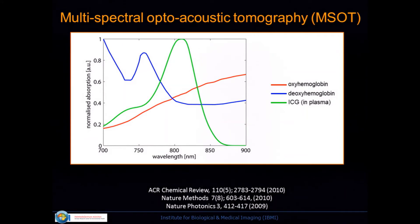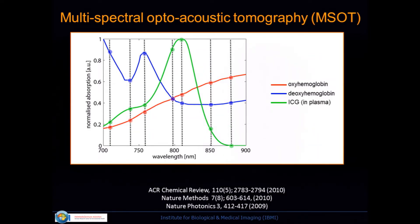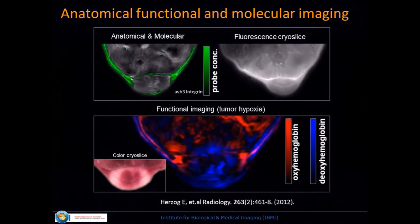We have three geometric dimensions — X, Y, Z — by translating the animal. The fourth dimension is so important we put it into the title of the method: multispectral. We don't care about just taking images at a single wavelength. We illuminate tissue at multiple wavelengths and then use unmixing methods — like in microscopy — to capture the absorption spectrum of different molecules. We can see the absorption spectra of deoxygenated and oxygenated hemoglobin, and of different injected agents like ICG, gold nanoparticles, and so on. We quickly illuminate at multiple wavelengths and obtain multiple wavelength images.